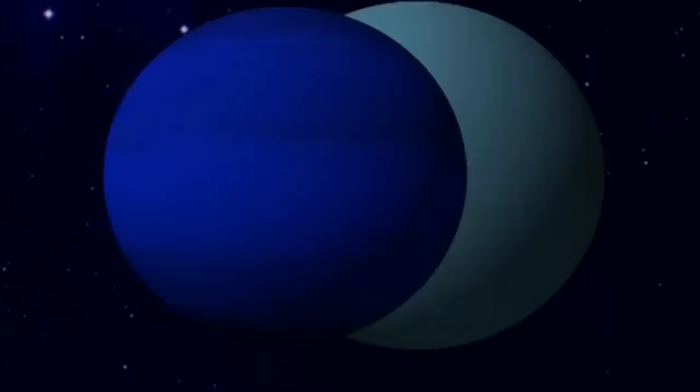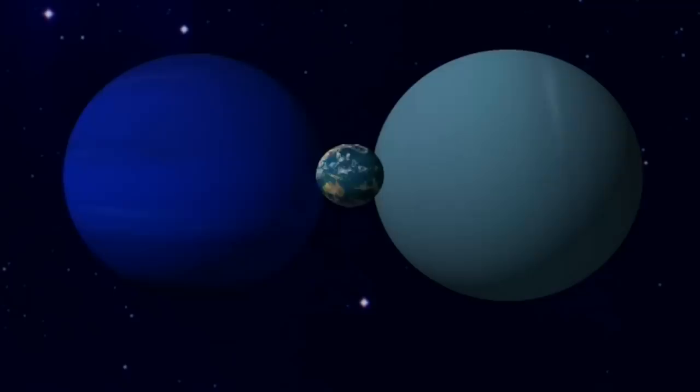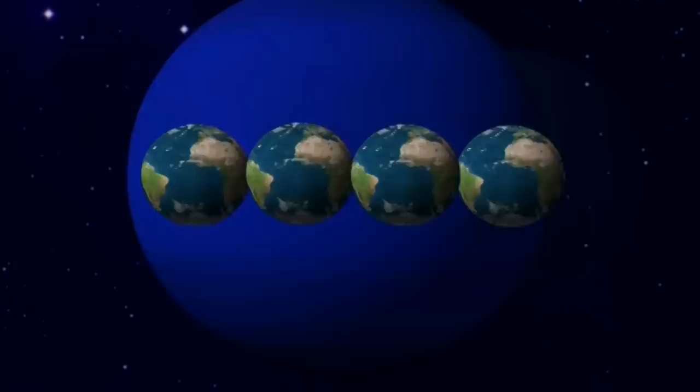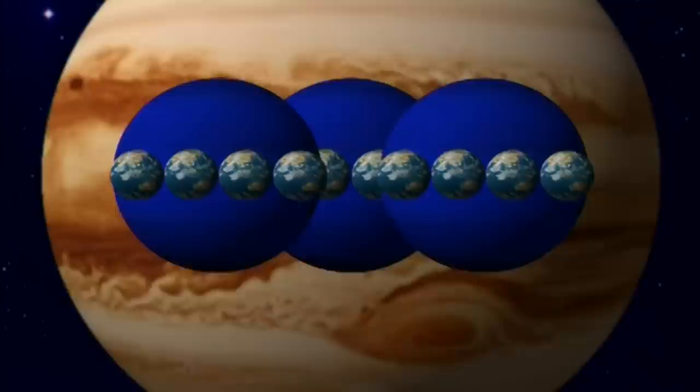Neptune, sur la gauche, est plus dense mais légèrement plus petite que Uranus. Elle fait plus de 4 fois la Terre avec un diamètre de 50,000 kilomètres. Alors que Jupiter équivaut à 12 terres ou à 3 Neptune.